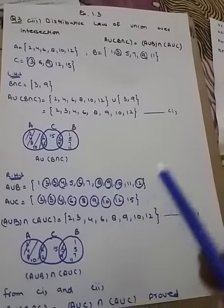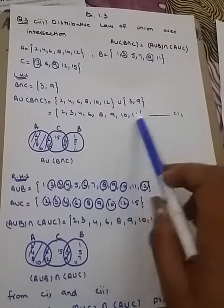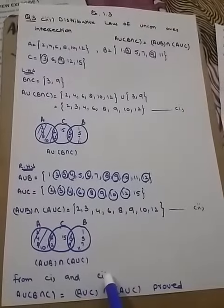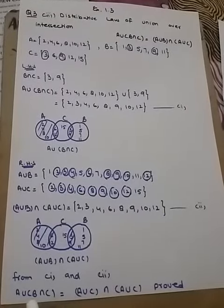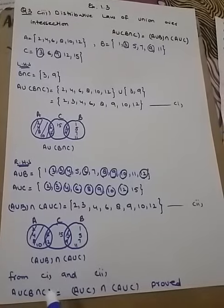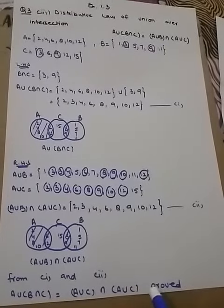Now this is equation one, this is two. From one and two we are getting that this distributive law of union over intersection is verified or proved.